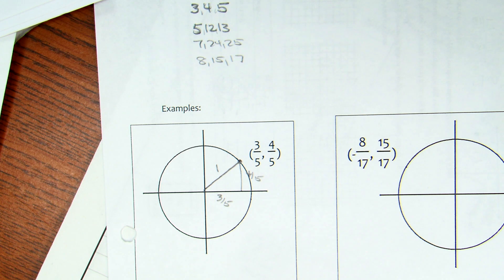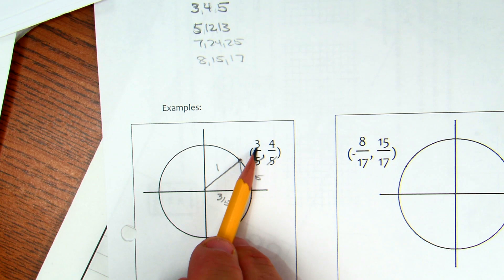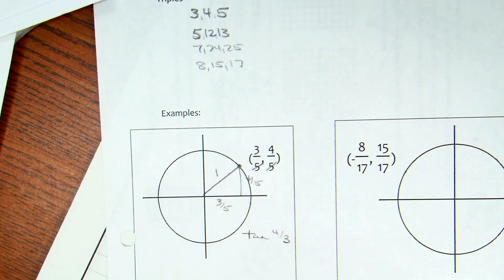This is where you might want to work a little bit. Tangent would be four fifths over three fifths. What are the fifths going to do to each other? Cancel. That makes sense. When you're figuring out tangent and cotangent, you can very simply cross out your denominator, just for tangent and cotangent. Does that make sense? And if I do that, now my y is four and my x is three. So tangent would be four over three. And then cotangent obviously would be three over four.